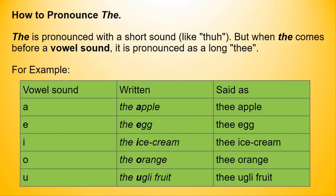For example: vowel sound A — written as follows and said as 'the apple'; vowel sound E — written as follows and said as 'the egg'; vowel sound I — written as follows and said as 'the ice cream'.